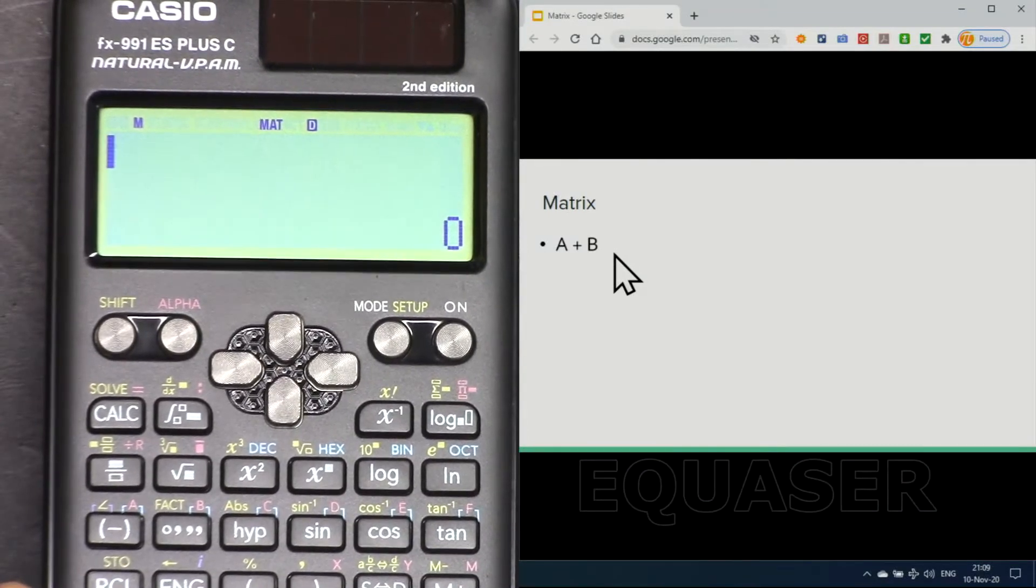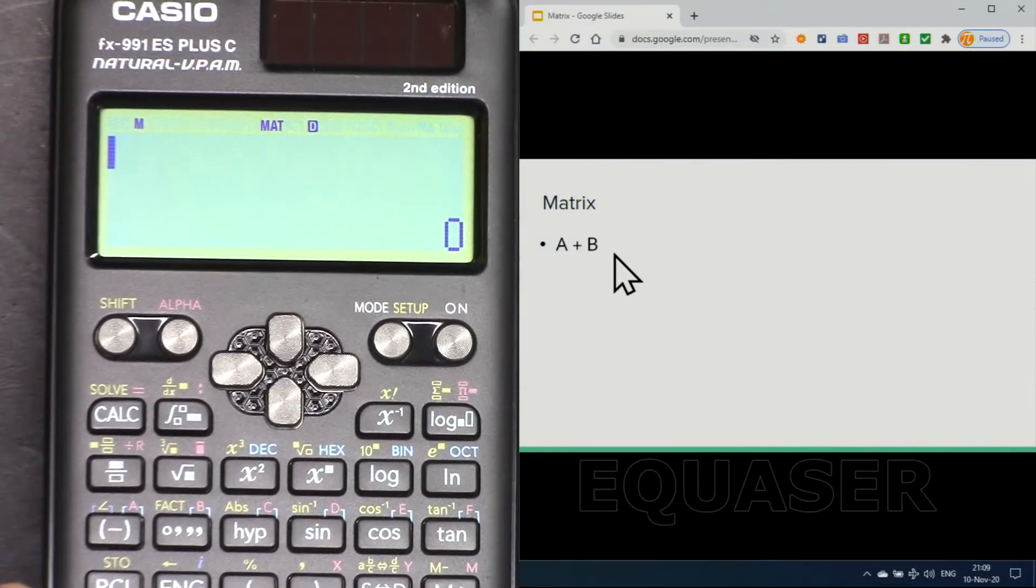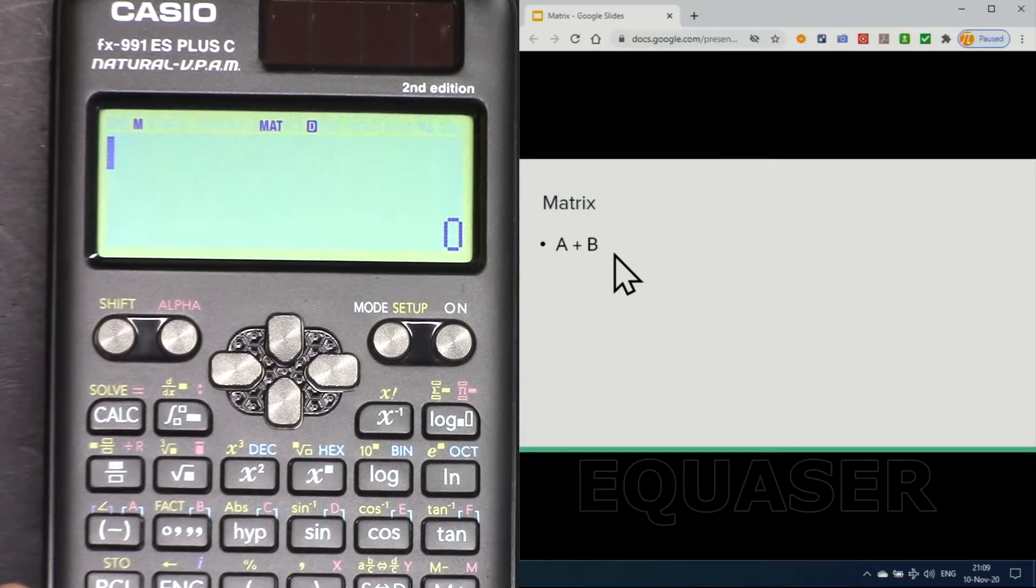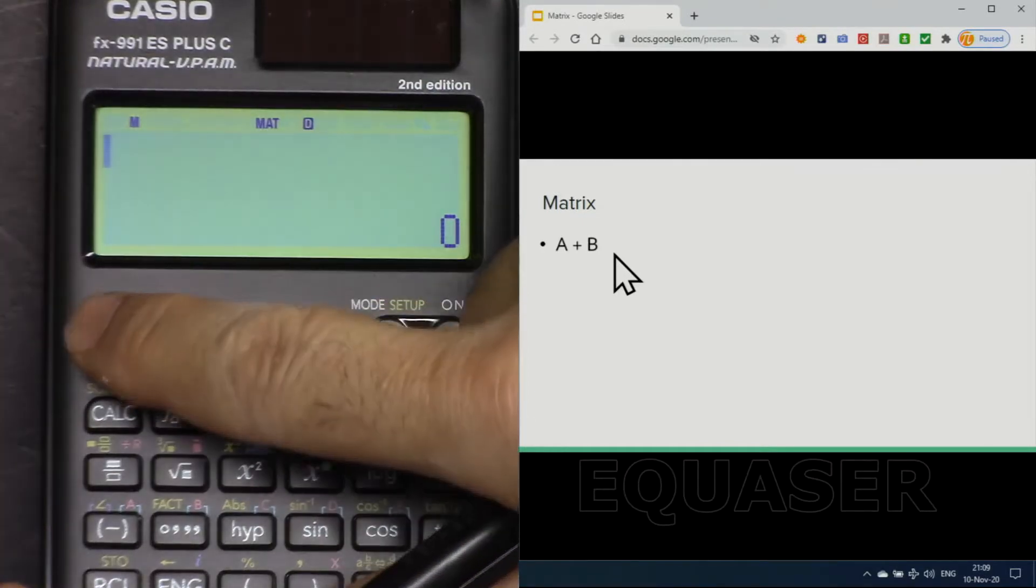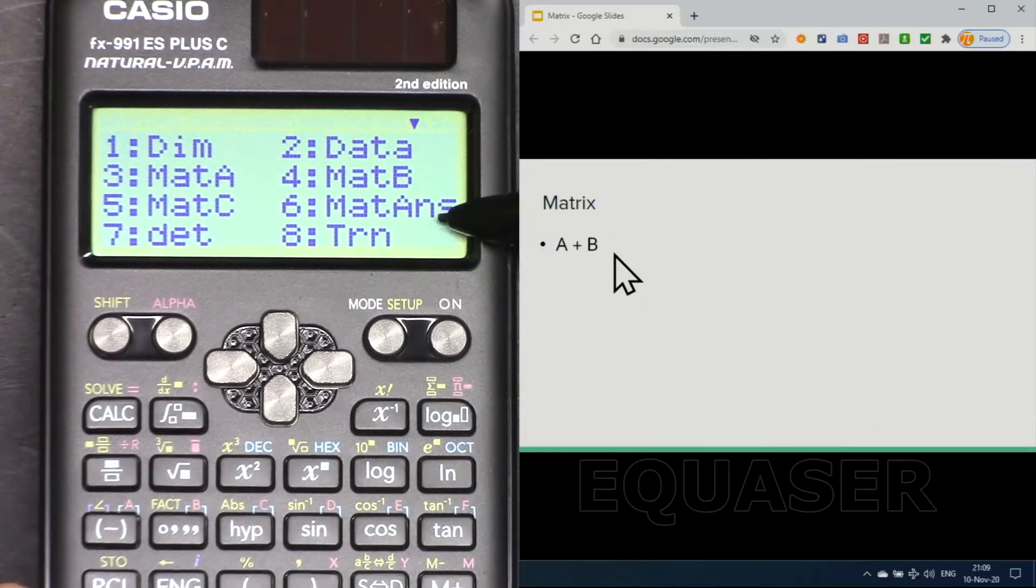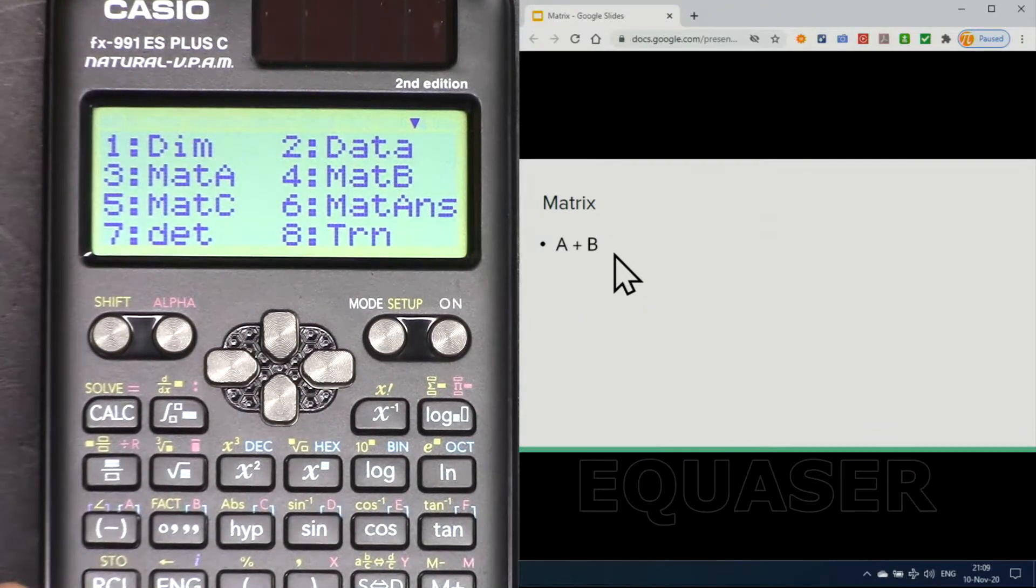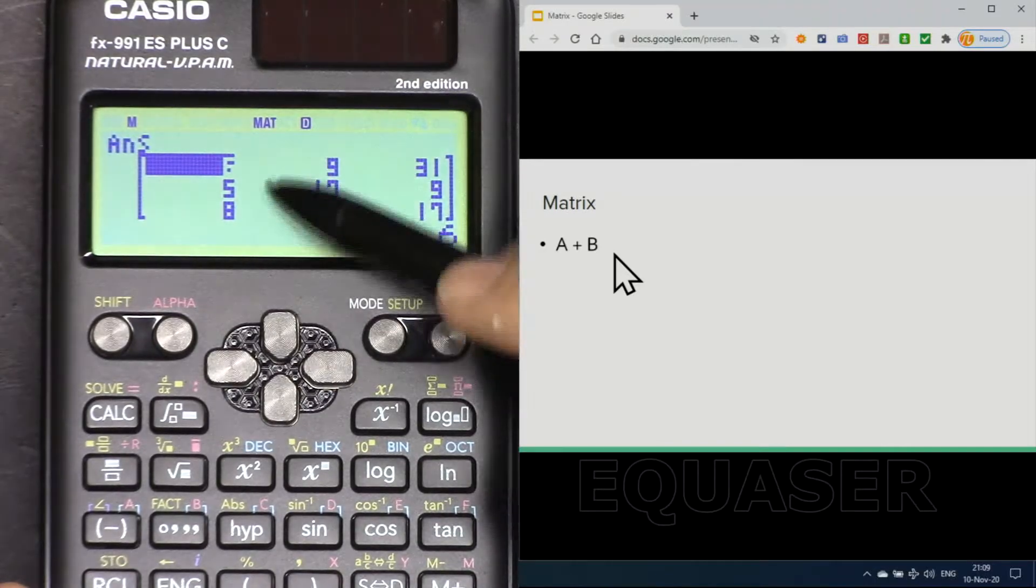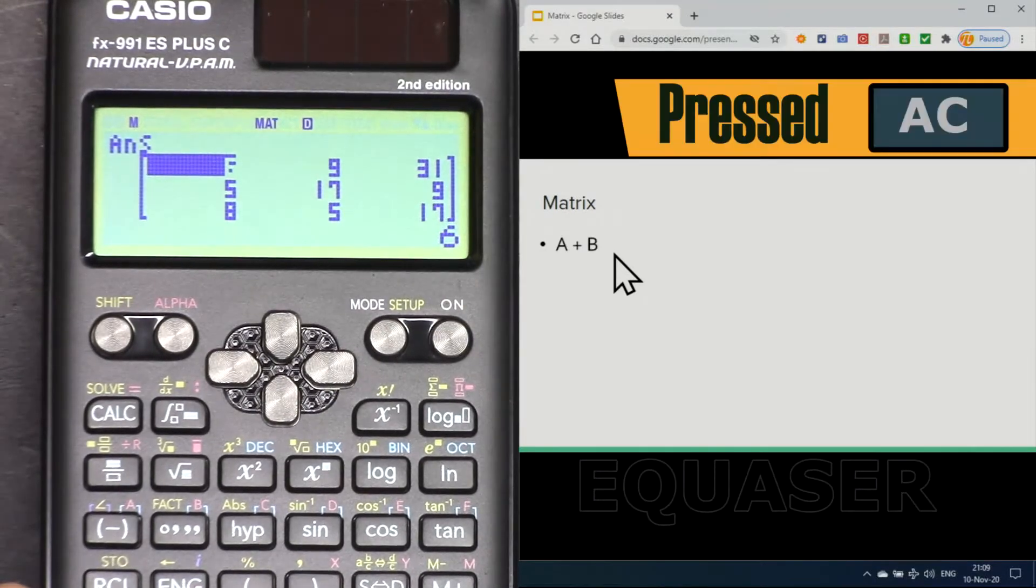Press equal sign. Now we have one extra matrix that is holding the last calculation result. You can access it by pressing shift matrix and here it says matrix answer, number six. If I press equal sign you can see the value here. All clear.